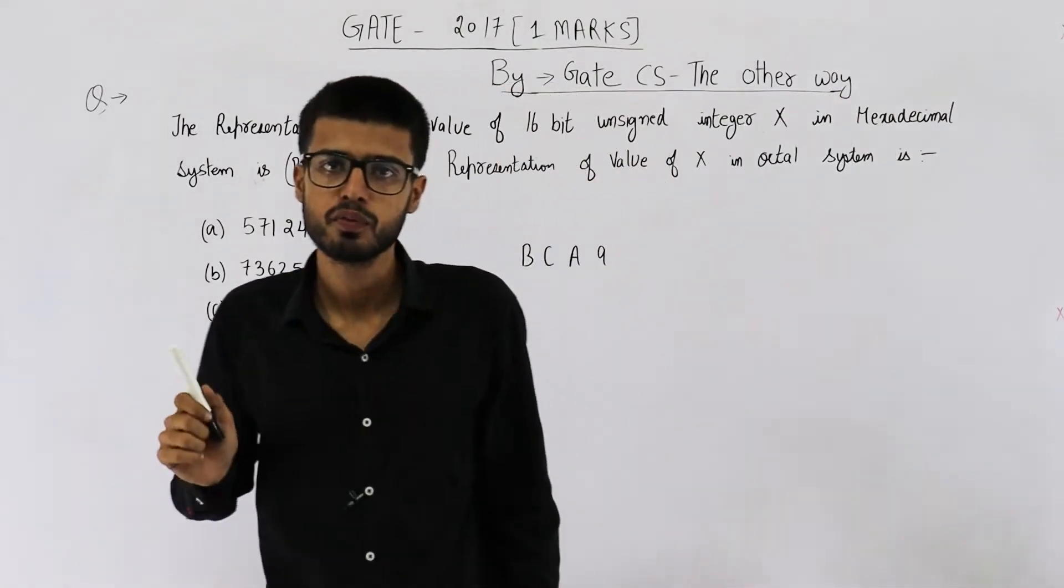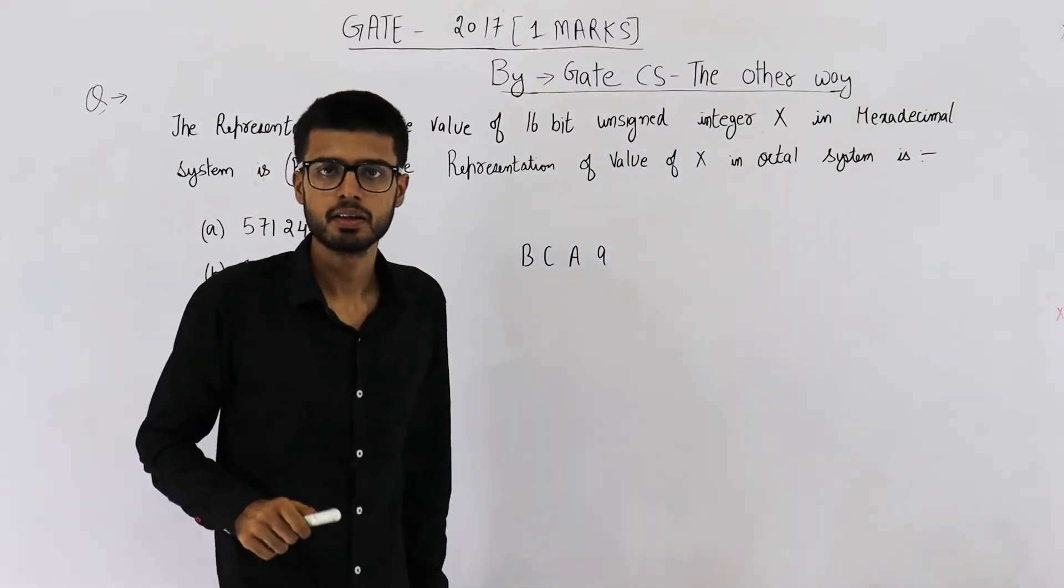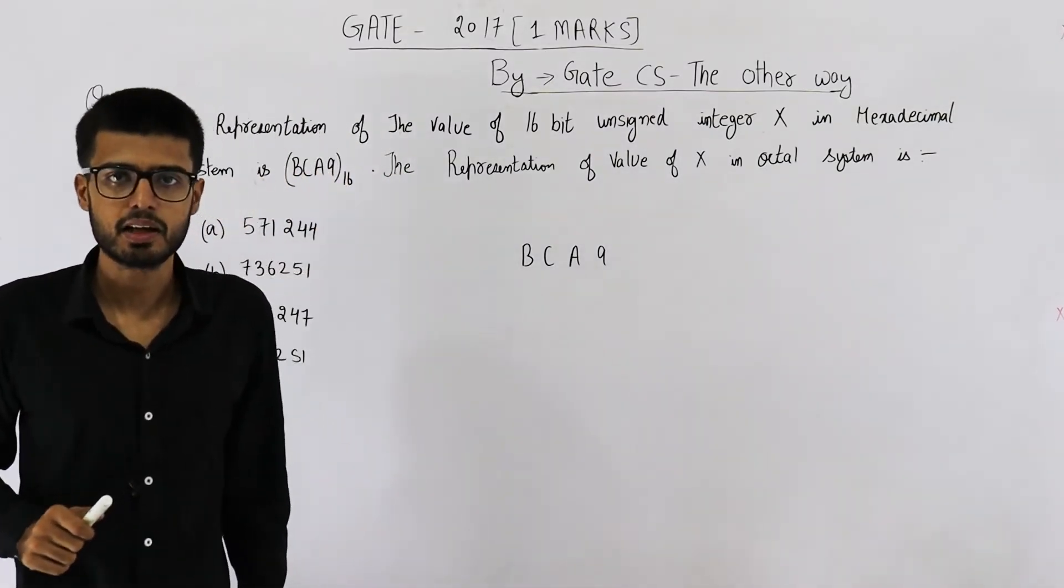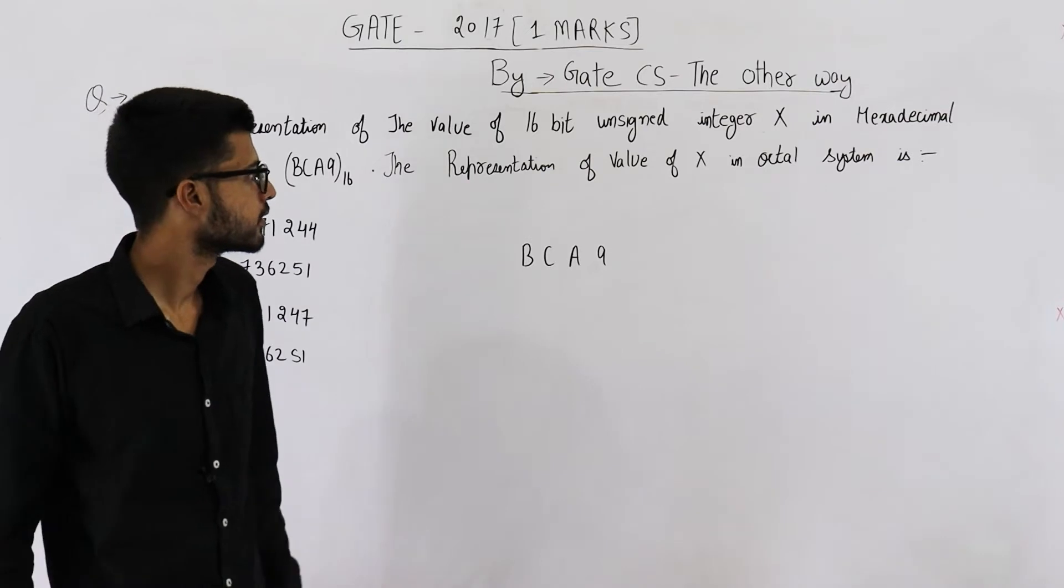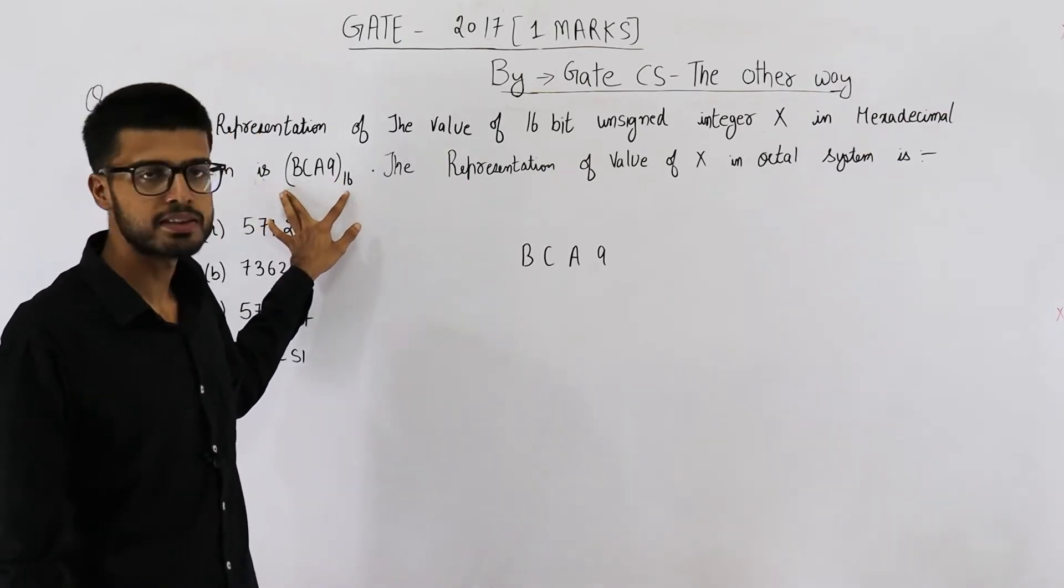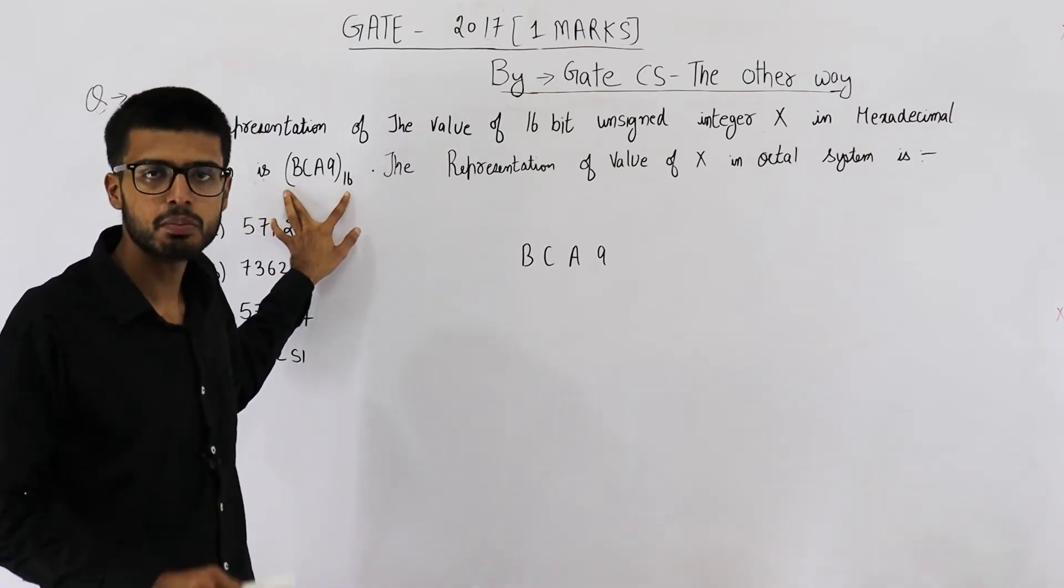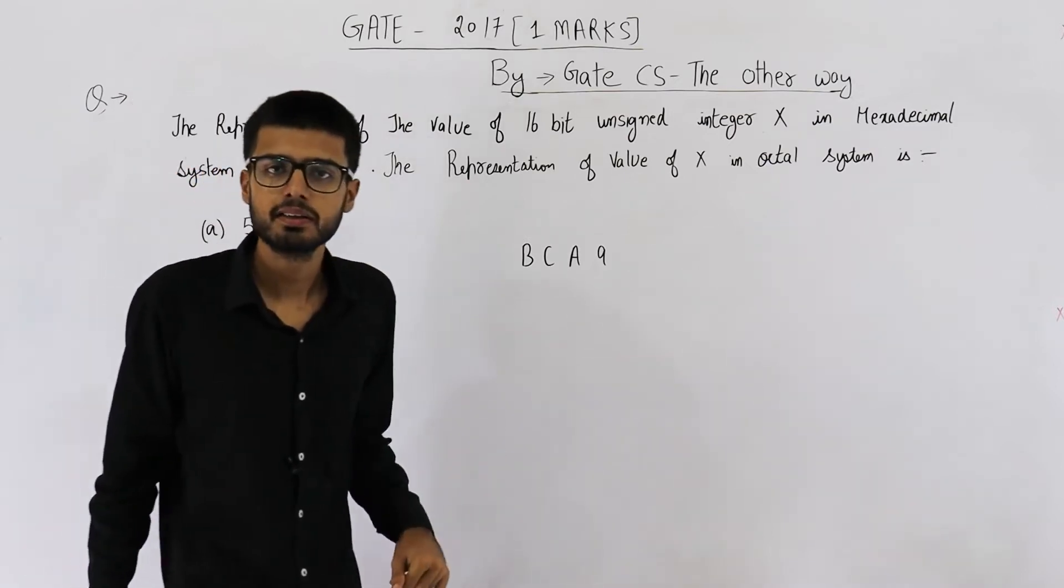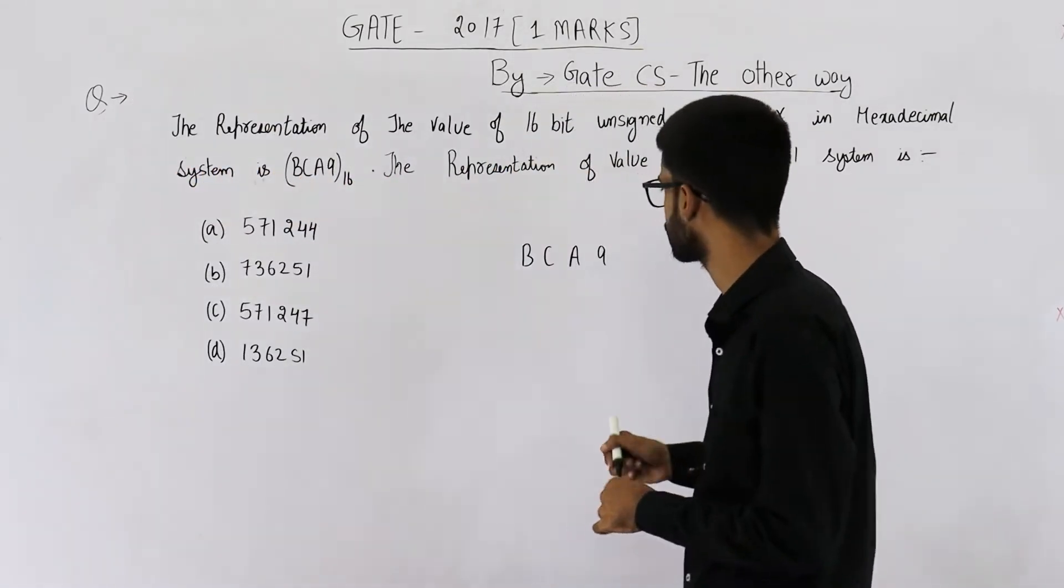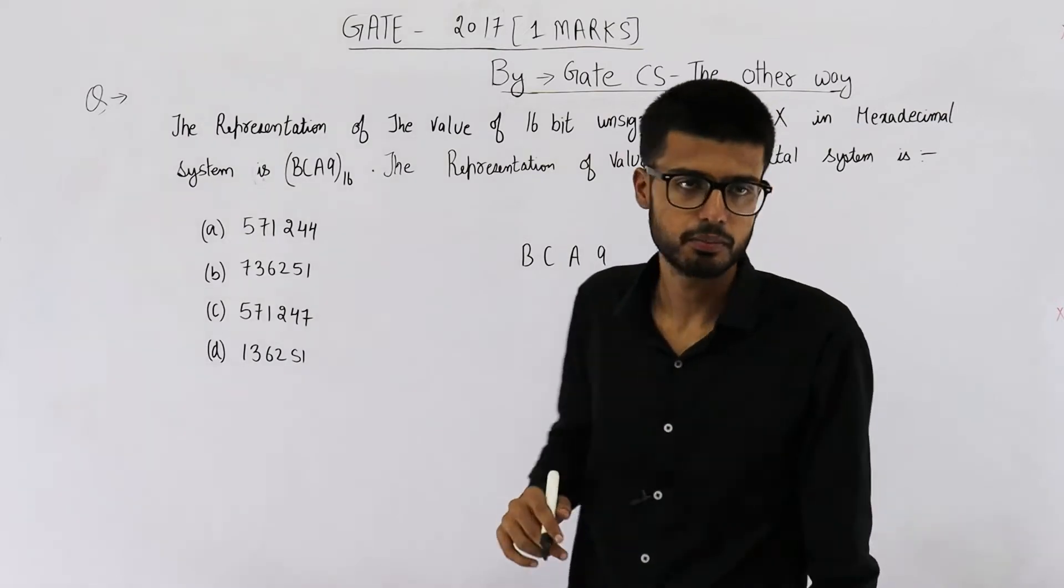That means we want to go from base 16 to base 8. Both 16 and 8 are powers of 2. That means first we can convert this base 16 number to a binary number very easily. Then that binary number will be converted into base 8. So let's find out binary equivalent of this number.